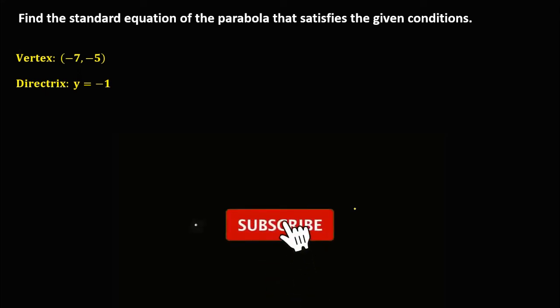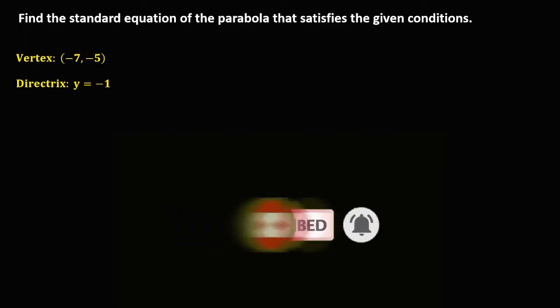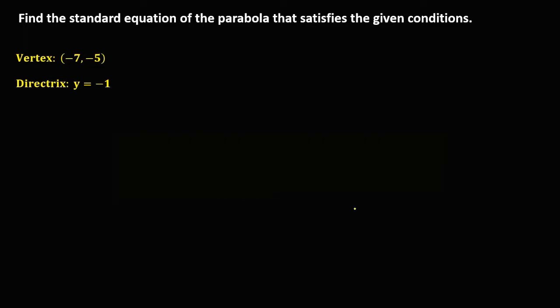Welcome to MathStorya. Let's have this problem: find the standard equation of the parabola that satisfies the given condition. We have the given vertex at negative 7 and negative 5, and the equation of the directrix y equals negative 1.